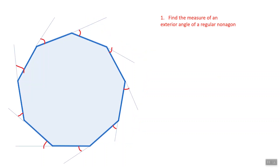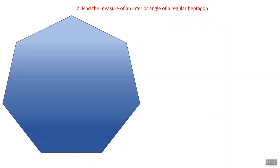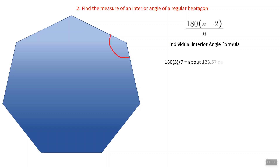Finally, let's apply our knowledge to three actual problems. Find the measure of an exterior angle of a regular nonagon. A nonagon has 9 sides, so n = 9. 360 degrees divided by 9 is 40 degrees. Find the measure of an interior angle of a regular heptagon. A heptagon has 7 sides, so n = 7. Using the individual interior angle formula: 180 degrees times 5/7 is approximately 128.57 degrees.